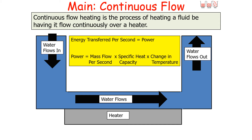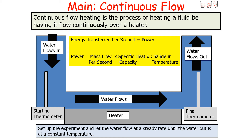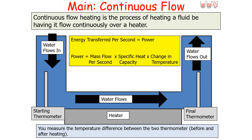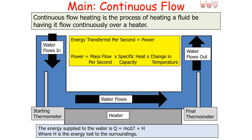Calculations involving continuous flow heating can be simplified by assuming heat transfer from the heater is 100% efficient. This can be assured by ensuring good thermal contact between the heater and fluid using a small amount of oil, and by minimising heat loss to the environment by wrapping the fluid container in insulating cladding. To carry out the experiment, set up the apparatus and let the water flow at a steady rate until the outlet water reaches a constant temperature. Record the flow of water and duration to calculate mass flow per second, then measure the temperature difference between the inlet and outlet thermometers. The energy supplied to the water is Q = mcΔT + H, where H is the energy lost to the surroundings.